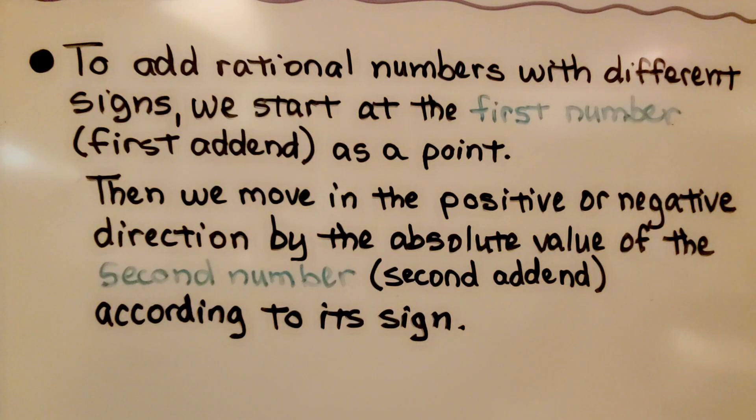To add rational numbers with different signs, we start at the first number, the first addend, as a point. Then we move in the positive or negative direction by the absolute value of the second number, the second addend, according to its sign.